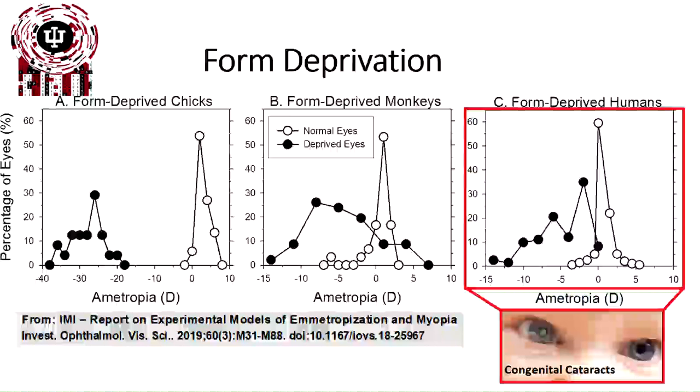How do we know this in humans? We know because human eyes sometimes have form deprivation naturally — in the form of congenital cataracts. A young child with a cataract in one eye experiences form deprivation: light still enters the eye but gets scattered by the cataract, so there's no clear image to focus. The eye with the congenital cataract develops far more myopia and grows longer than an eye with normal natural unoccluded vision.